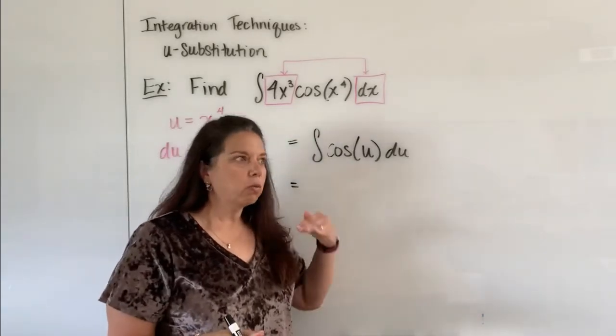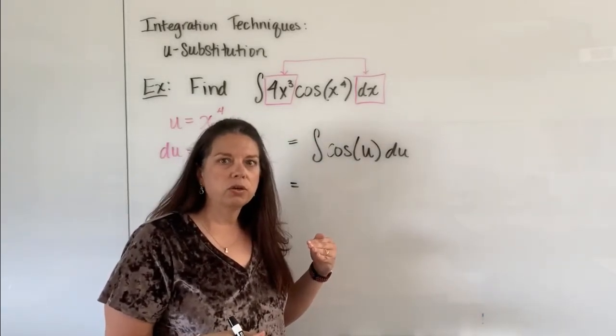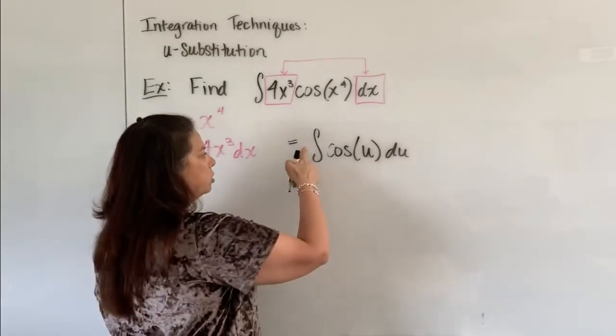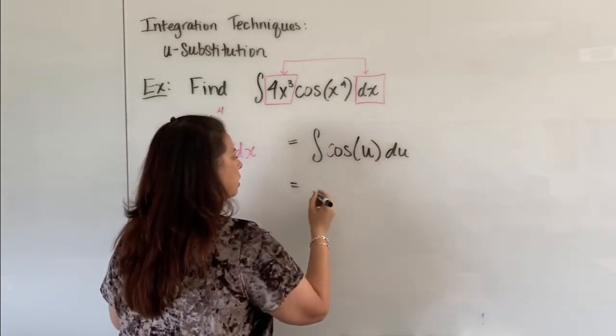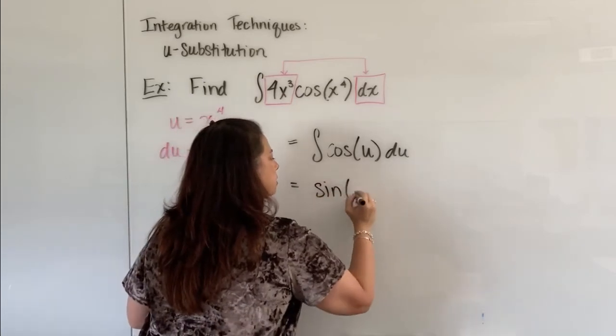Remember, if you think about, what's the antiderivative of cosine u? Sine u. So when I integrate cosine u with respect to u, I literally just get sine of u.